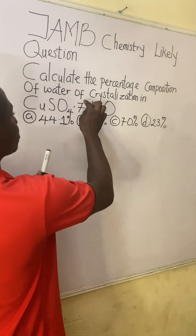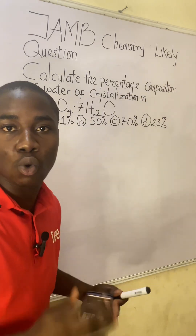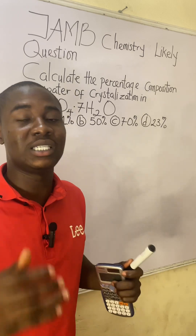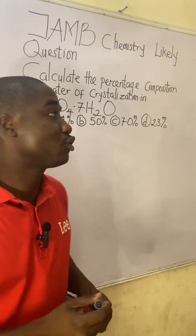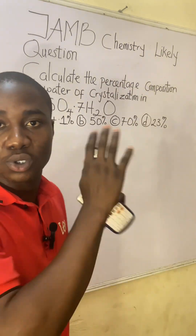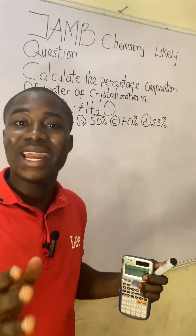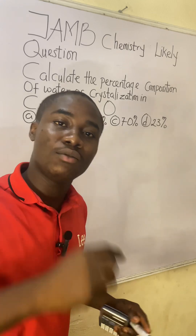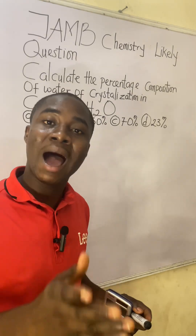The water of crystallization part in this compound is 7H₂O. This particular question is from the topic in chemistry called percentage composition. I'm about to write out the formula that must be noted whenever you see any question on this particular aspect, because at the end of this video lesson I'm going to give you a practice question.